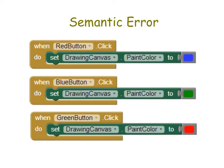Here's an example of a semantic error in App Inventor. You can see there are no errors on it — this would work and function — but it wouldn't do what the programmer intended. When the red button is clicked, it sets the paint color to blue. More than likely, what the programmer wanted was that when the red button was clicked, it would change the paint color to red.